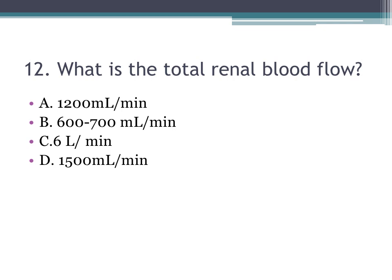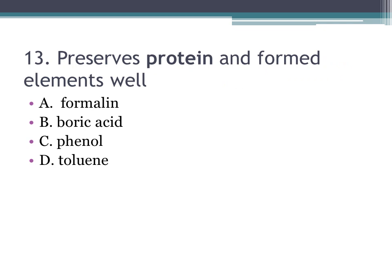Number twelve: what is the total renal blood flow? A. 1200 mL per minute, B. 600 to 700 mL per minute, C. 6 liters per minute, D. 1500 mL per minute. The correct answer is A, 1200 mL per minute.